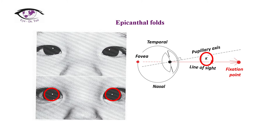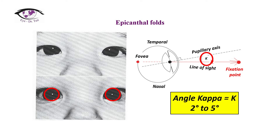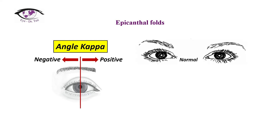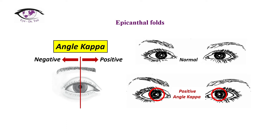Angle kappa is the angle formed between the pupillary axis and the visual axis. The normal angle kappa range is between two to five degrees. When the angle kappa is outside this normal range, we talk about negative and positive angle kappa. A positive angle kappa is present when the visual axis is nasal to the pupillary axis. As you can see on the photo, the light reflex is located a bit nasally, which simulates exotropia.